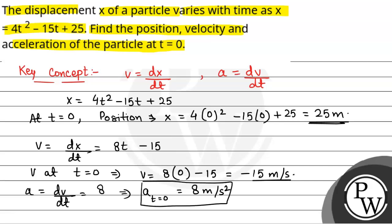So, acceleration at t is equal to 0 is 8 meters per second squared, velocity at t is equal to 0 is minus 15 meters per second, and position at t is equal to 0 is 25 meters. This will be the final answer.